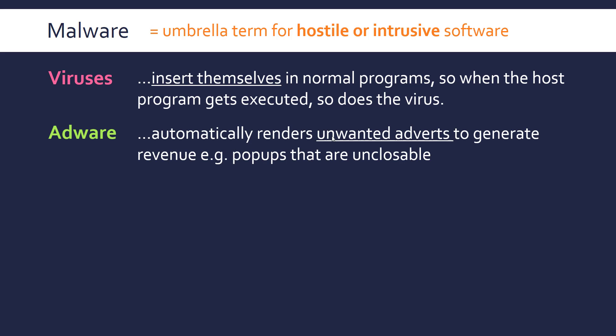A second main type is adware, which you've probably come across to some extent. This automatically renders or generates unwanted adverts in order to make money for whoever started the attack — the instigator. You've come across the annoying pop-ups and stuff that are unclosable, and they might link to other types of malware.